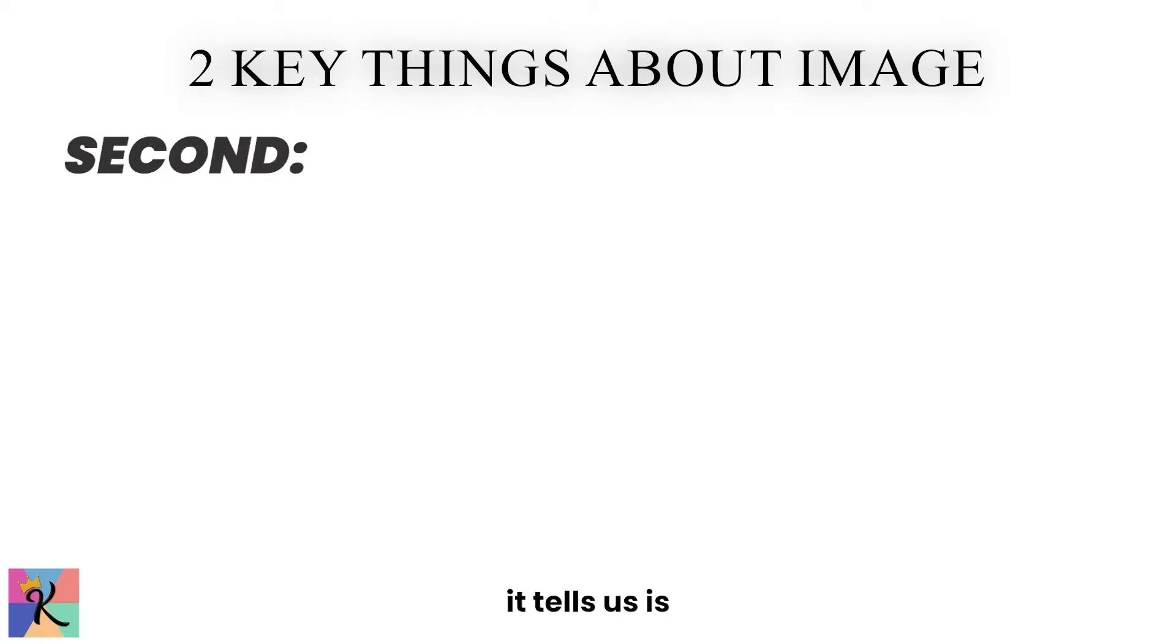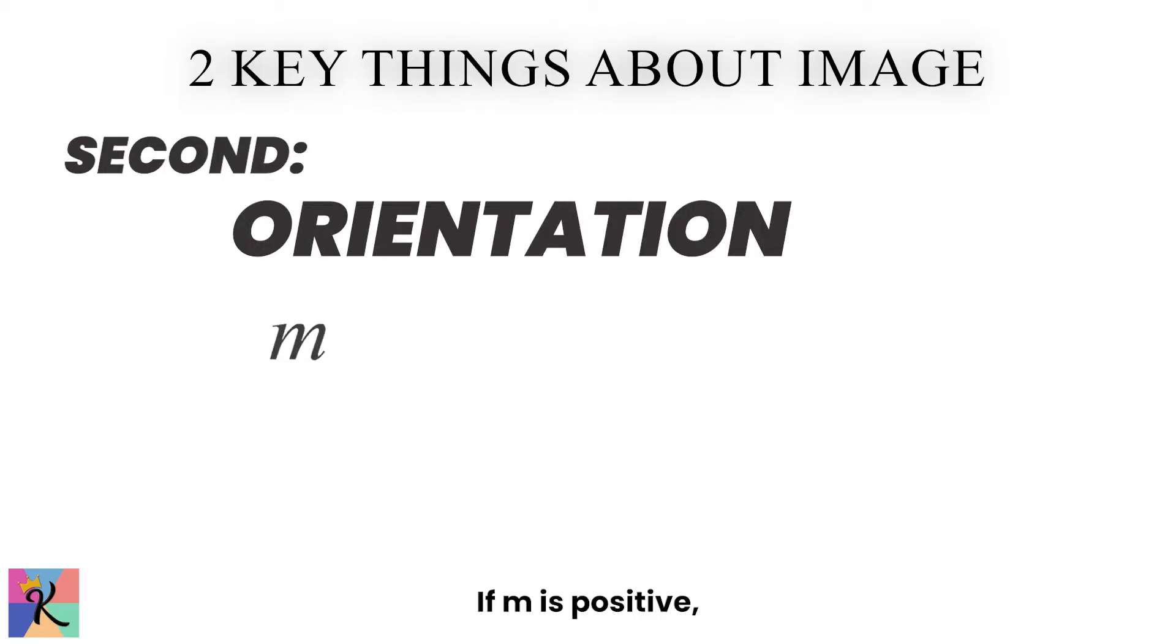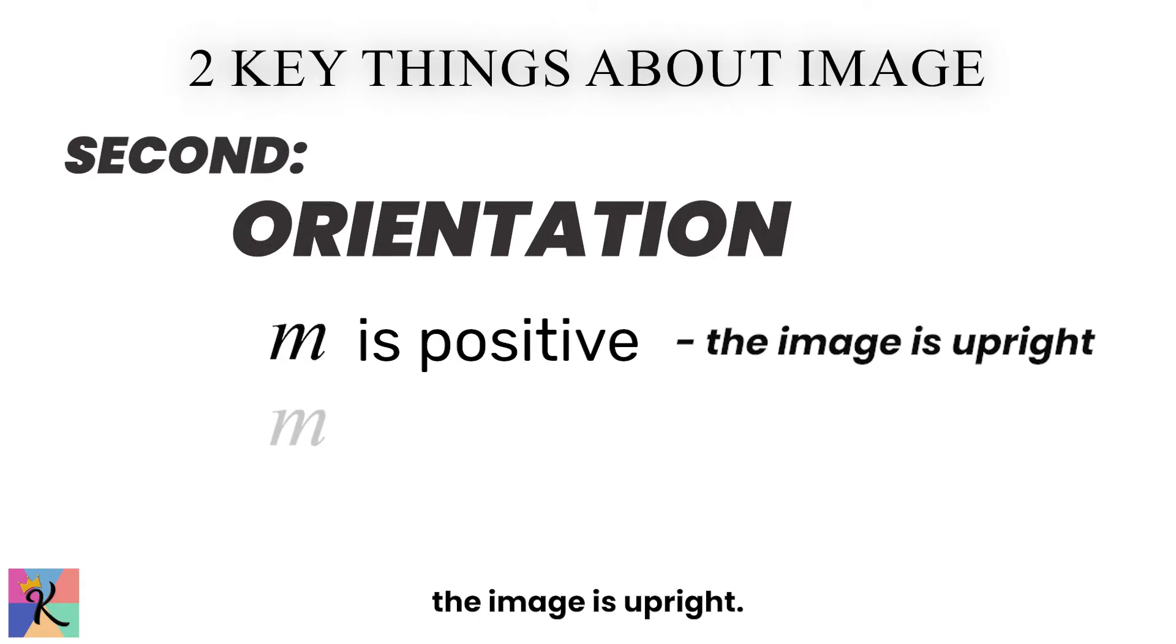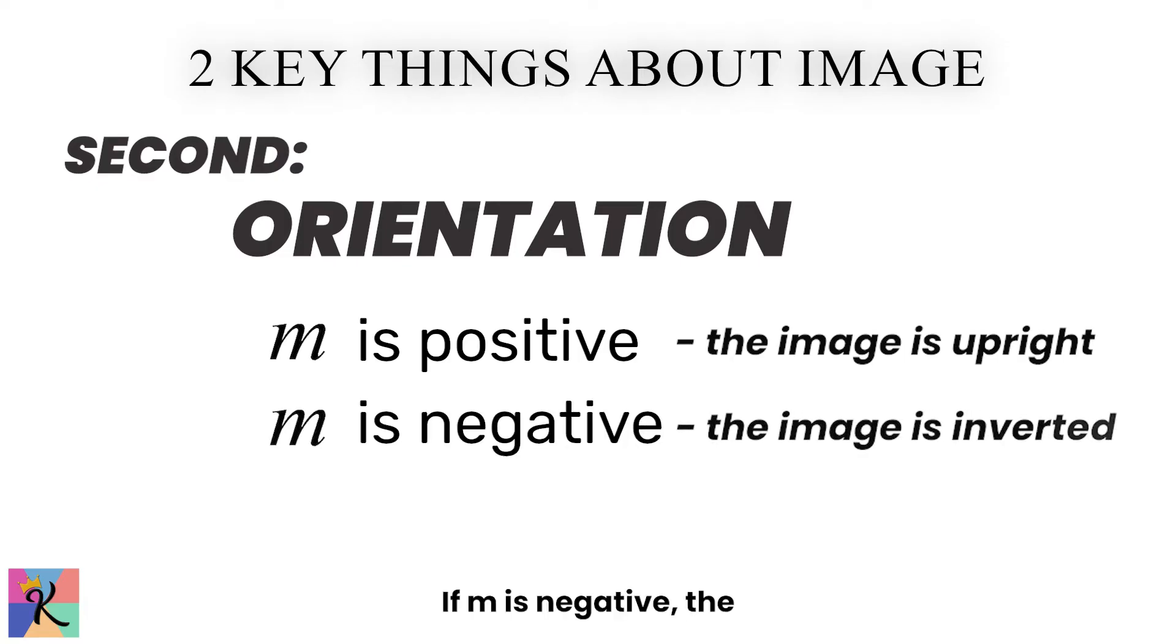The second thing it tells us is the orientation. If M is positive, the image is upright. If M is negative, the image is inverted.